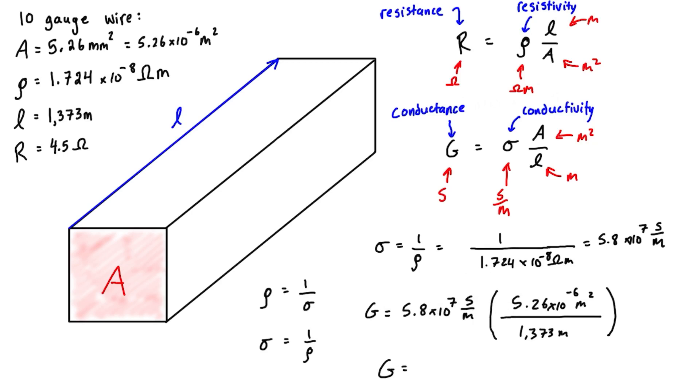When we solve that, we find the overall conductance is equal to 0.222 Siemens.